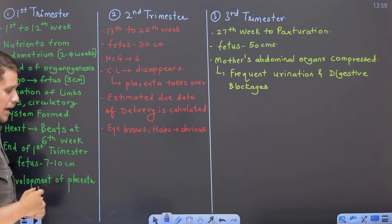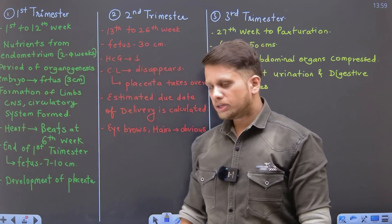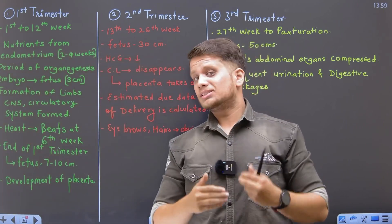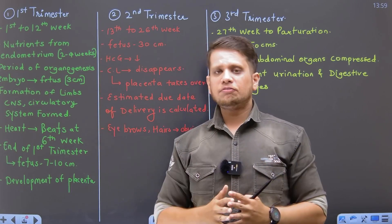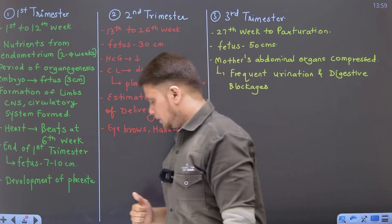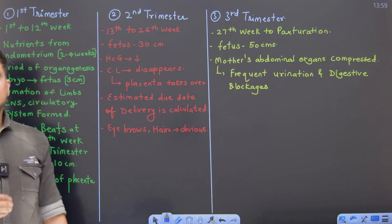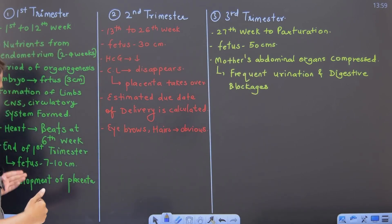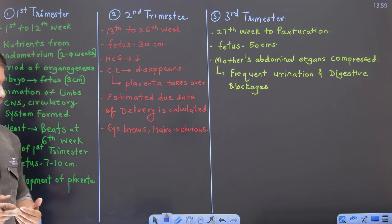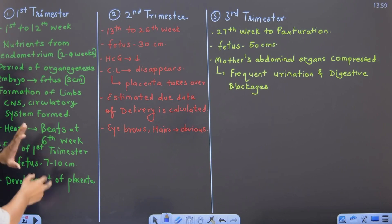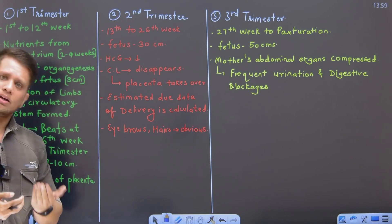There is development of the central nervous system, circulatory system, and one important point to note here is that the heart begins to develop or start beating at the 6th week. By the end of the first trimester, the size of the baby or the fetus is approximately 7 to 10 centimeters. And yaha se placenta ka development bhi shuru ho jaata hai. Yeh first trimester mein jaha pe bohat sare major developmental cheezein ho rahi hain.